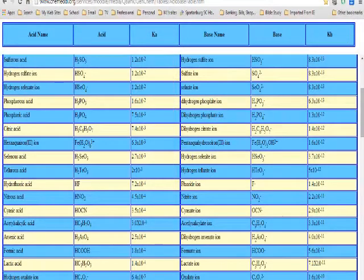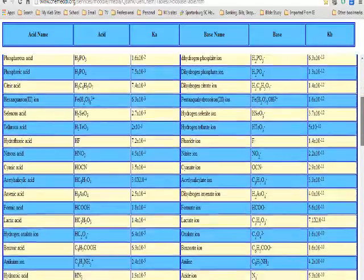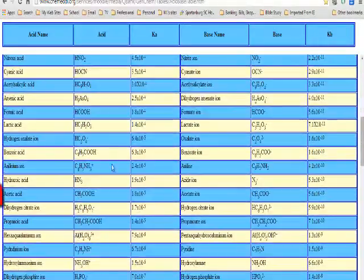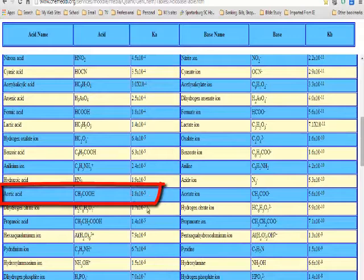And here's a whole list of acid ionization constants. And here's acetic acid down here and it says its acid ionization constant is 1.8 times 10 to the negative 5th.